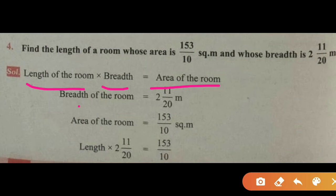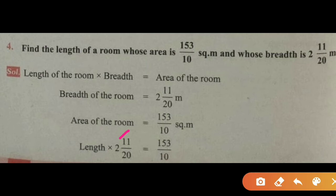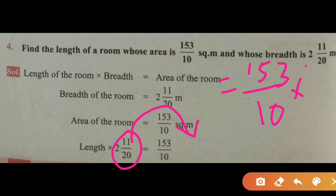They are given the breadth and area, and we want to find the length of the room. The breadth of the room is 2 and 11 by 20 meters. Converting from mixed fraction to improper fraction: 2 times 20 plus 11 equals 51, so breadth is 51 by 20 meters. The area of the room is 153 divided by 10 square meters. So length into 51 by 20 equals 153 divided by 10.